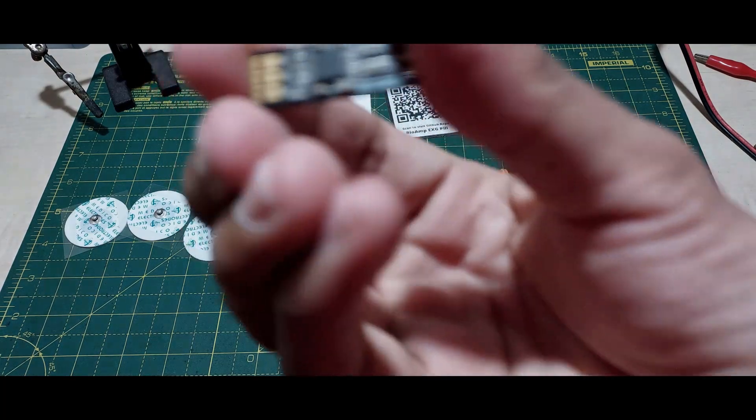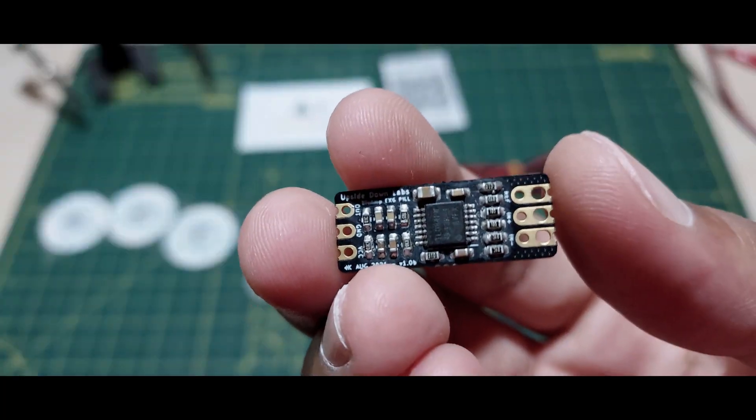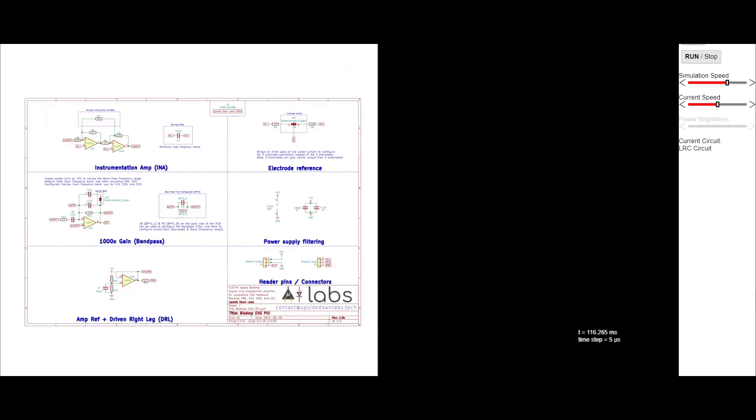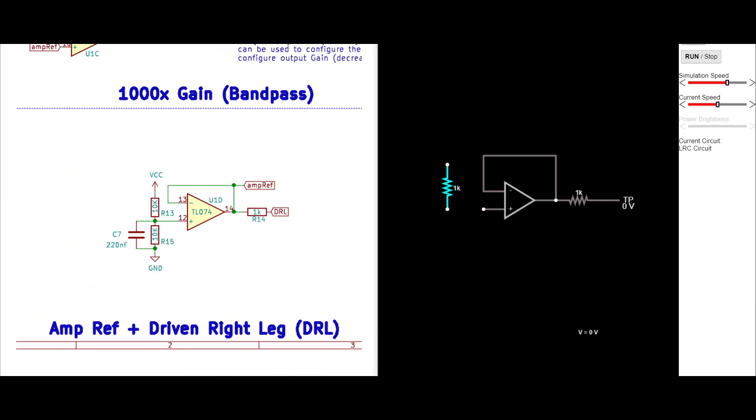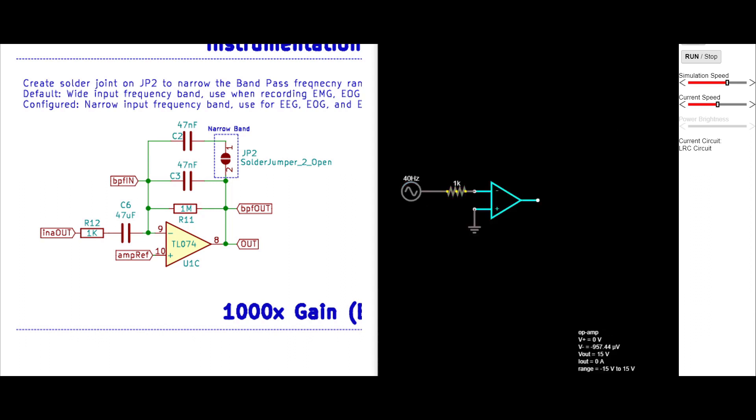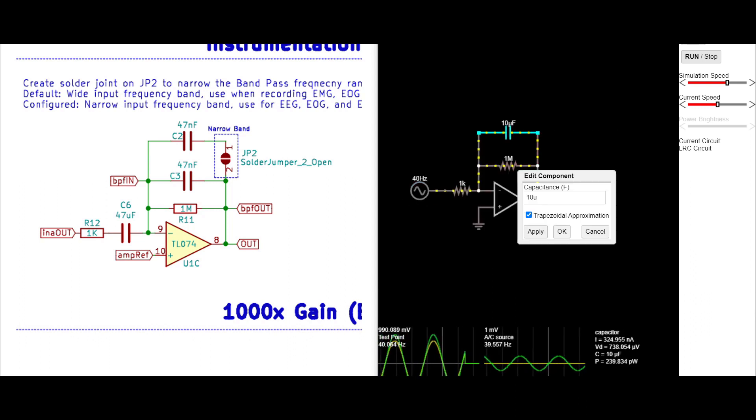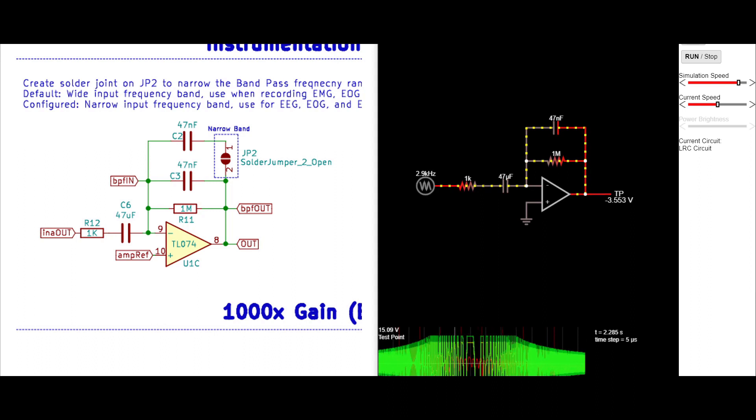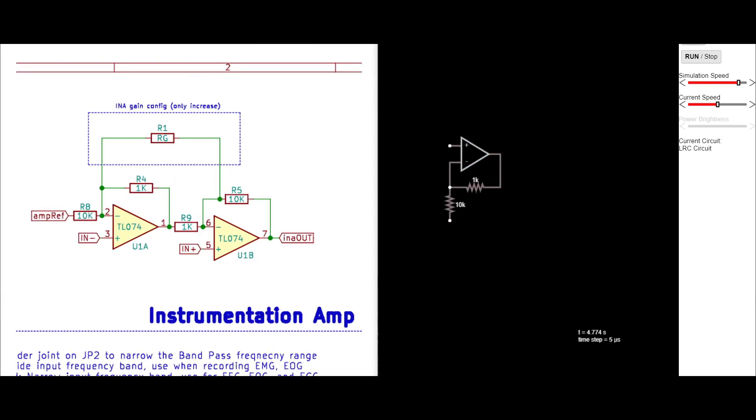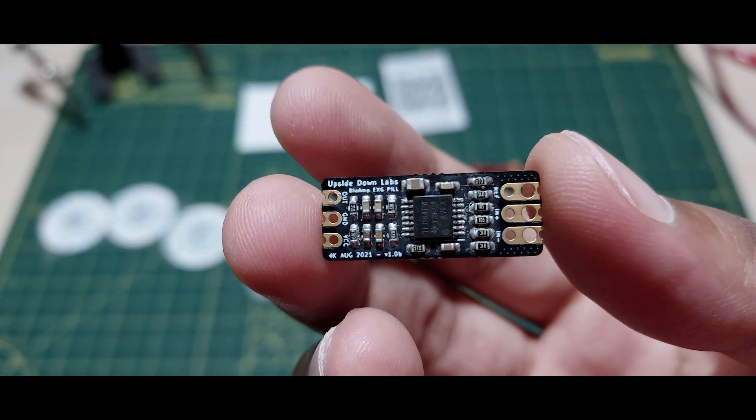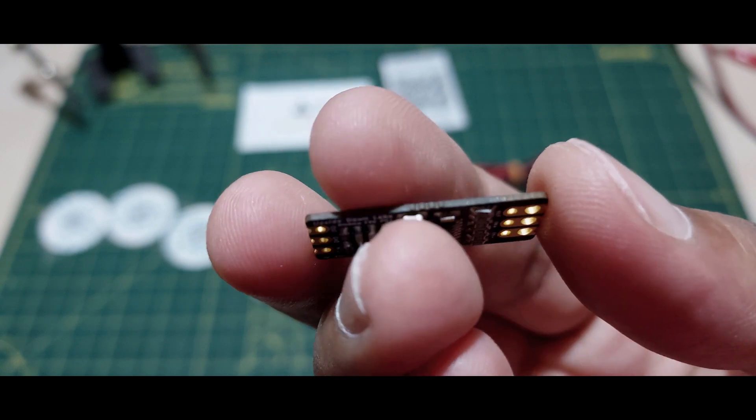The BioAmp EXG pill is a tiny little PCB and onboard is a very clever circuit that consists of the power supply stuff, a buffered reference that sits halfway between the supply rails, an inverting op-amp amplifier with a gain of 1000 that has some capacitors added to provide filtering functionality, which makes this a simple bandpass filter, and a two op-amp instrumentation amplifier. For such a simple circuit, the things this board can do are remarkable.